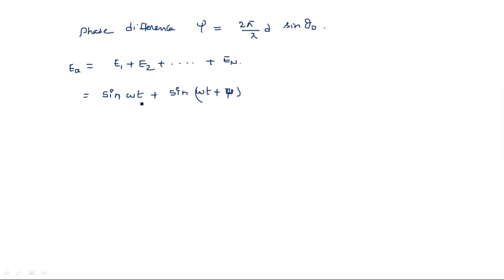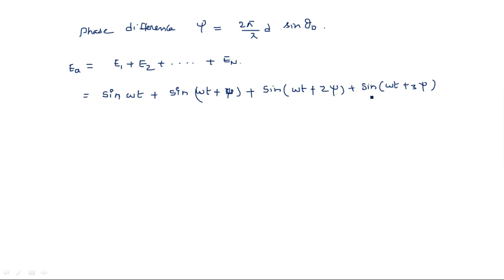The phase difference between successive elements is confirmed as psi: (ωt + ψ) − ωt = ψ. The third element is sin(ωt + 2ψ), the fourth is sin(ωt + 3ψ), and so on. Each successive element differs by psi from the previous one. The nth element is sin(ωt + (n−1)ψ).